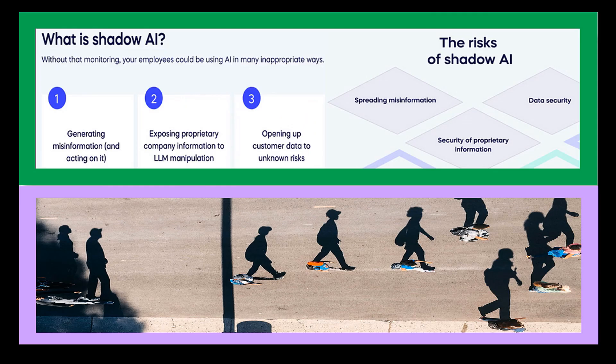Shadow AI, also known as Dark AI, refers to the hidden and undisclosed application of artificial intelligence that operates behind the scenes, gathering vast amounts of sensitive data and insights without users' knowledge or consent. Unlike traditional AI that aims to augment human abilities, Shadow AI has a largely unregulated and sometimes nefarious purpose — collecting and exploiting user data for commercial gain, political manipulation, or malicious activities.